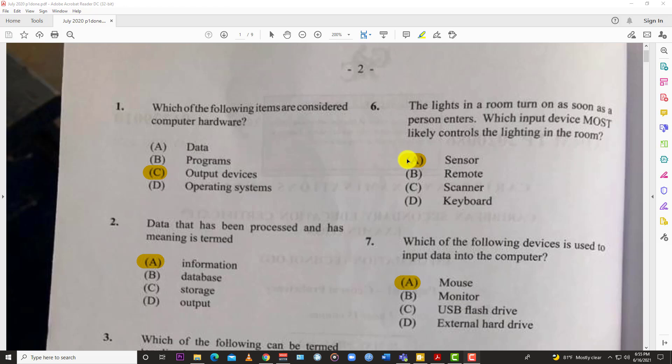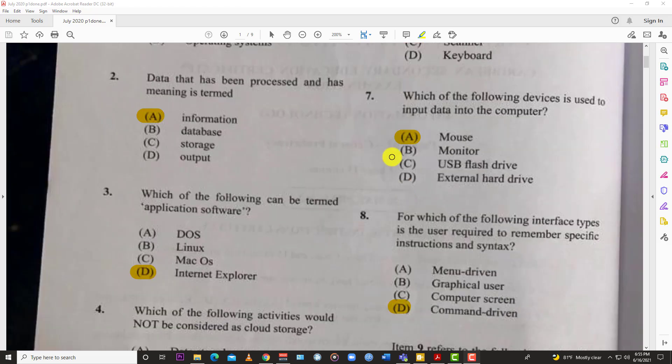Number seven: which of the following devices is used to input data into the computer? By method of elimination alone, the only thing used to input data is of course a mouse. A monitor displays data, a flash drive stores data, hard drives store data, but a mouse can be used to input data using the cursor to click icons and things like that.